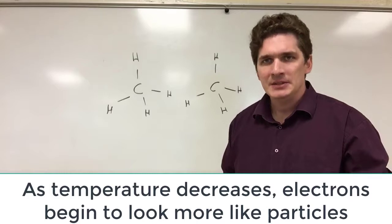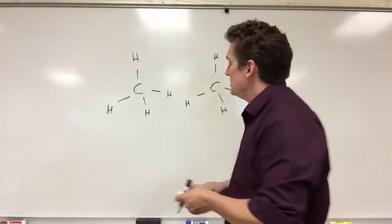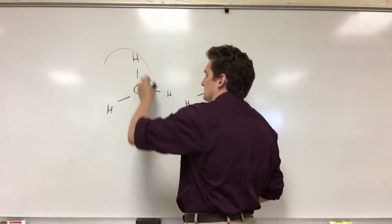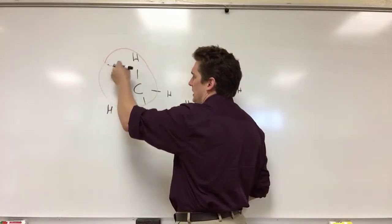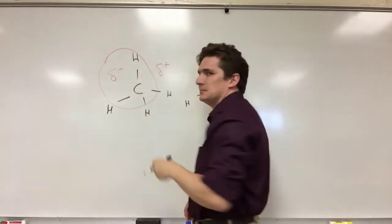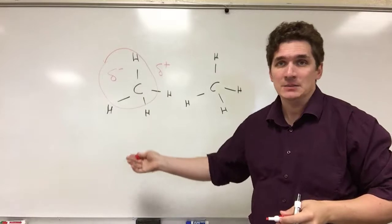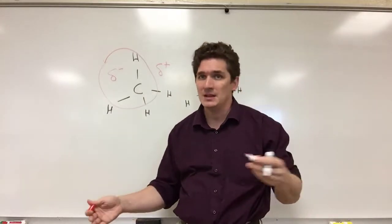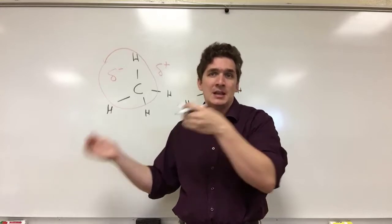And the other thing electrons can do, statistically speaking, is they can move to one side of the molecule. So if they go to one side just for a moment, the left side of this molecule is going to look negative and the right side is going to look positive. Now this methane molecule is in isolation, meaning that we have low pressure. It does this quick shift in electron density, no one sees it, and it bounces back.